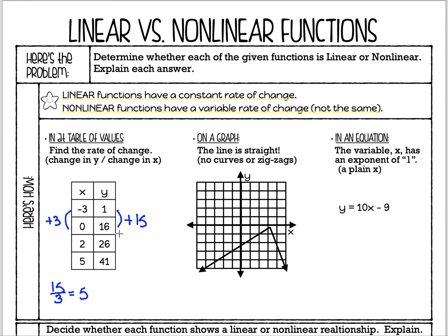Let's try the next interval. From 16 to 26 that's a plus 10, and from 0 to 2 that's a plus 2. You might think this isn't linear because the numbers are different — however, be careful. You have to check your change in Y over change in X. If we do 10 over 2, that equals 5 — the same rate of change.